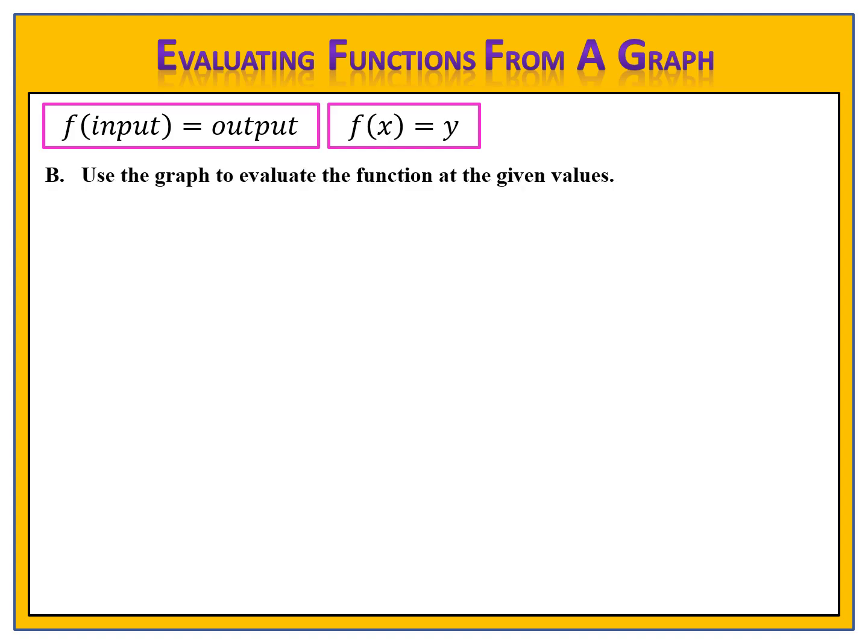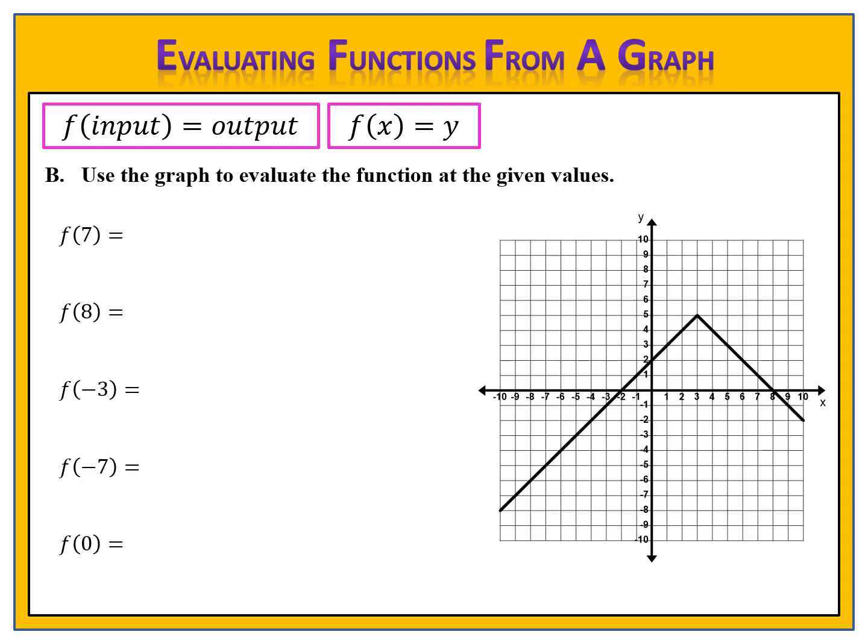Now let's look at a different function. This one is an upside-down v-shaped graph, known as an absolute value function — we'll learn more about that later. Can you use this graph to evaluate the function for f of 7, f of 8, f of negative 3, f of negative 7, and f of 0? Give it a try and come back when you're ready.